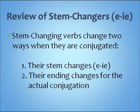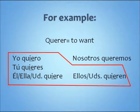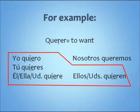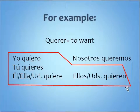For example, if it's an ar verb, you take off the ar and you add either o, os, a, -amos, or -un. To review what an e to ie stem changer looks like, we have the verb querer, which means to want. If you follow our three steps, you take off the er — you're left with quer for your stem. You change that e to an ie in all of the forms except nosotros. Then since it's an er verb, you add o, es, e, -emos, and -en. So you've got quiero, quieres, quiere, queremos, and quieren.